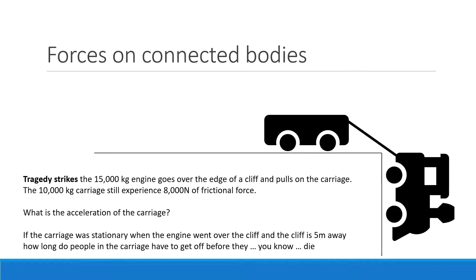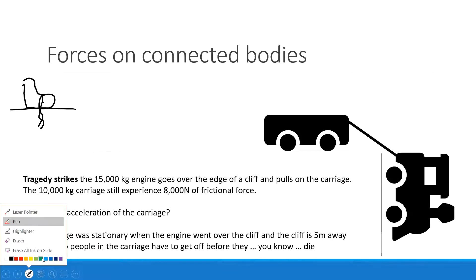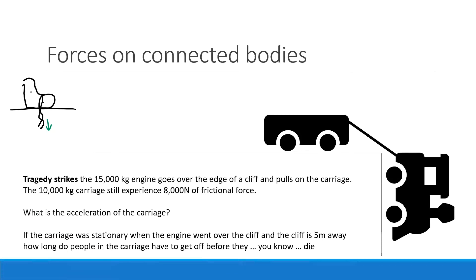Think of a shoe sitting on a table with its shoelace dangling over the edge. That shoelace experiences gravity, but just because the shoelace experiences gravity doesn't mean the whole shoe gets pulled off the table — the force of friction on the shoe may be large enough to keep it there. Similarly, the frictional force on this train carriage might even be large enough to stop it from slipping over the edge.